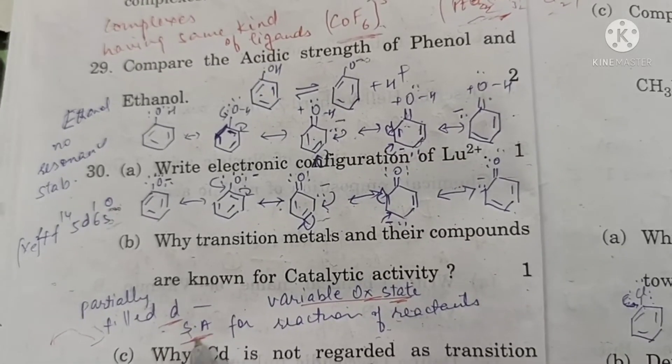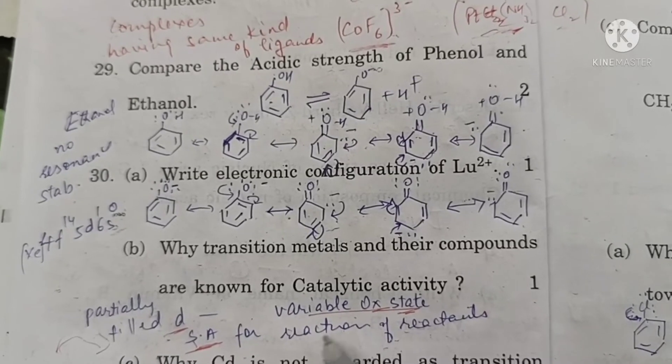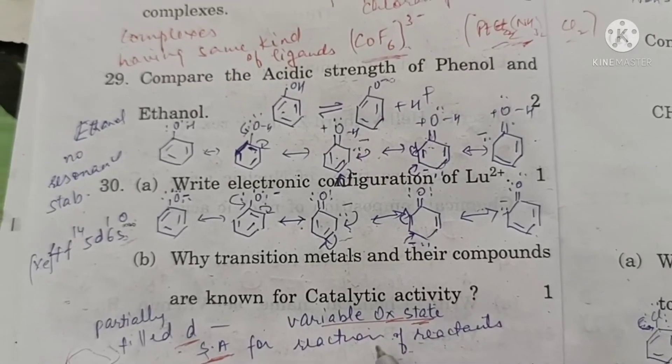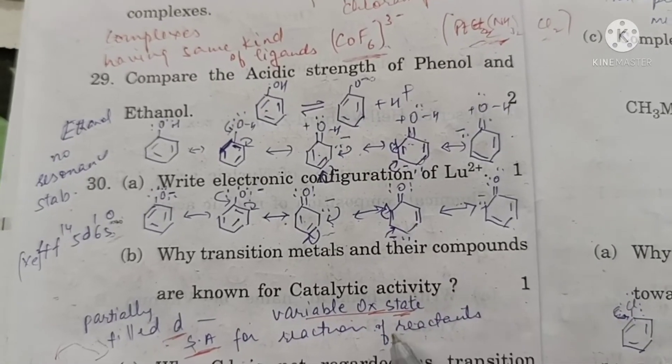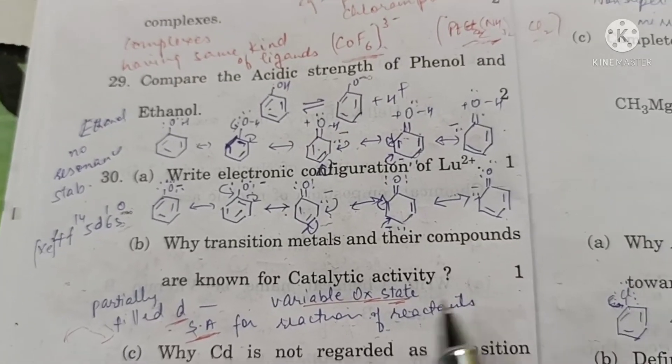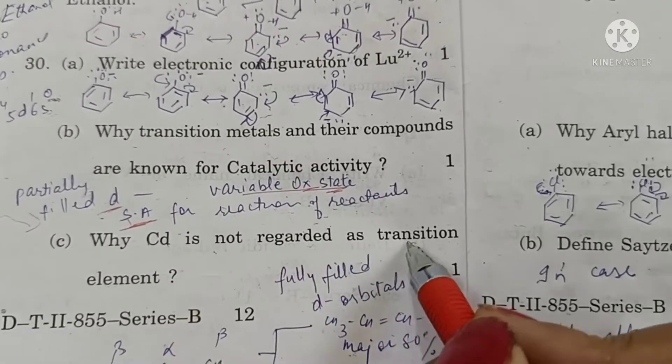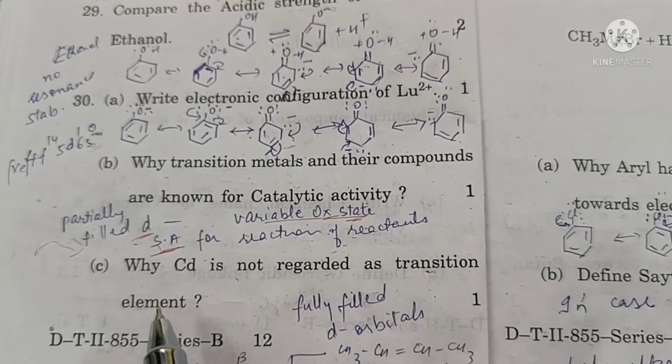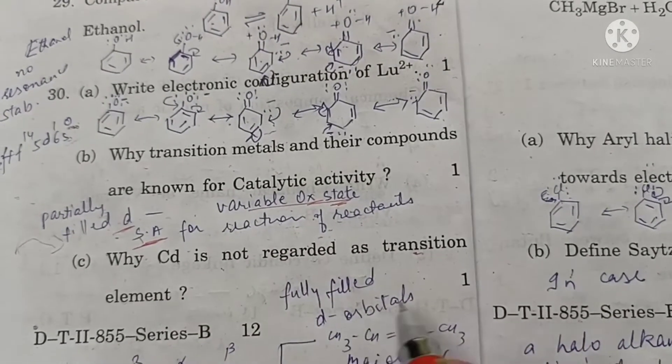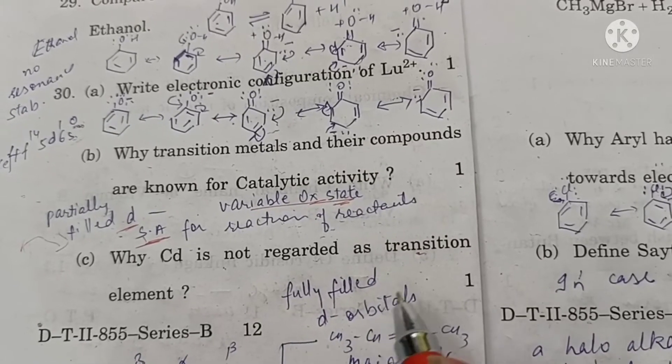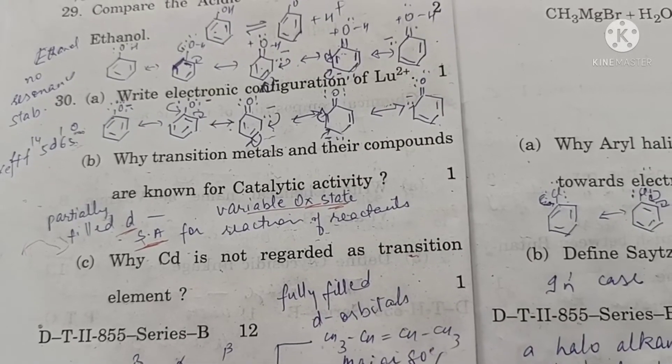Also, they can provide surface area for adsorption of different reactants and thus bring the reactants close together to carry out the reaction between them. So they act as catalyst. Why cadmium is not regarded as transition element? Because it has fully filled d orbitals. So it is not a transition element.